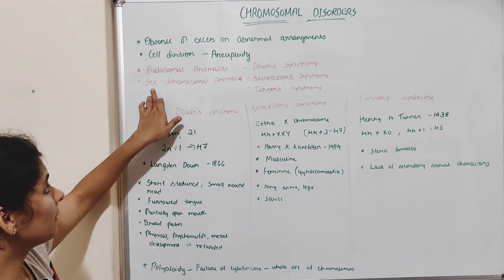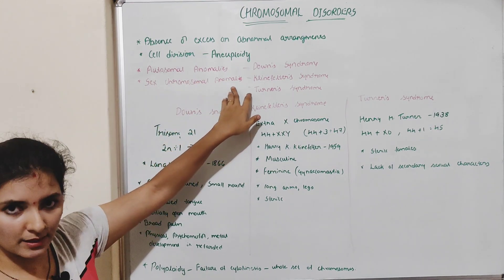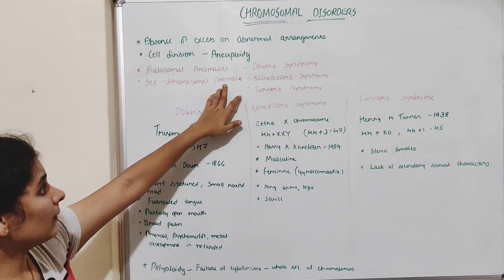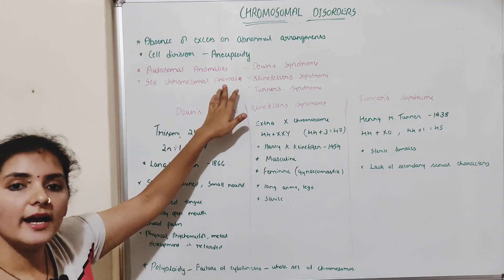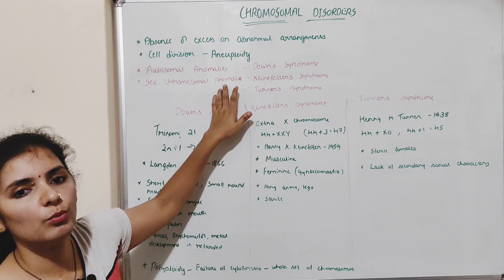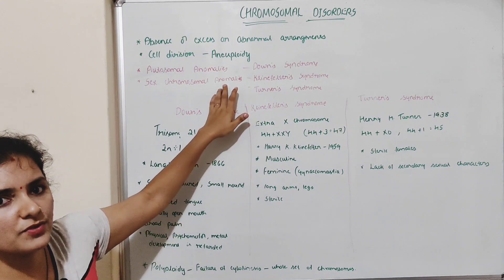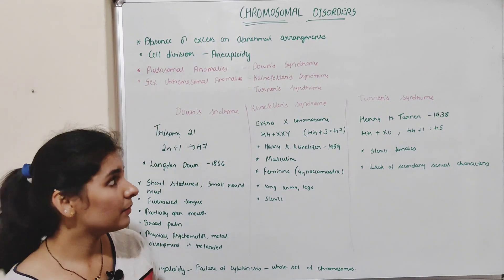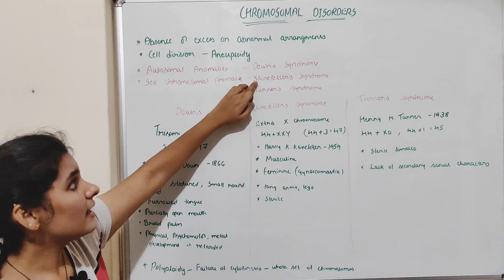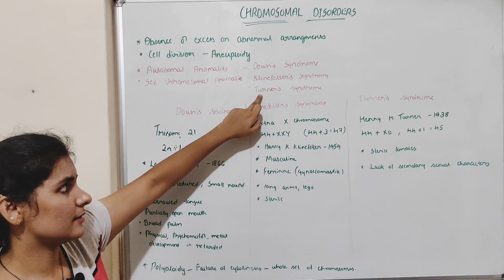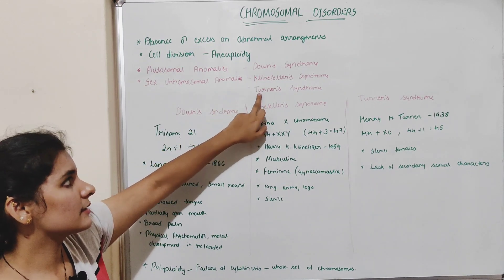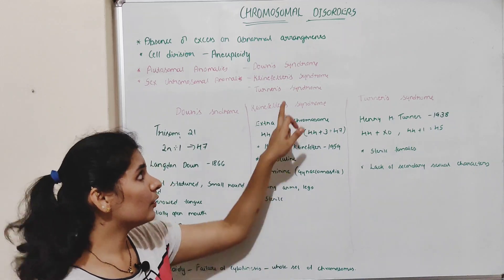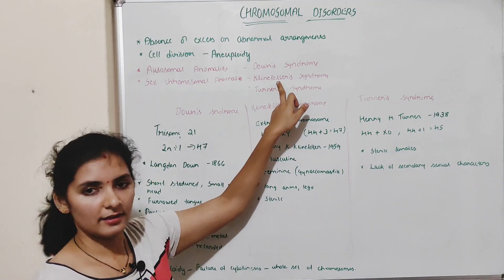Now let me talk about sex chromosomal anomalies. Sex chromosomal anomalies means addition or deletion of one or more chromosomes in the sex chromosomes. The best examples for that are Klinefelter syndrome and Turner syndrome. We will discuss these two syndromes one by one.